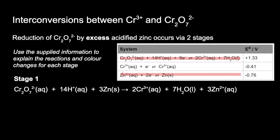In stage 2, the Cr³⁺ ions generated in stage 1 also feature in system 2. We're still interested in zinc because it's in excess. The chromium 3+/2+ system is more positive than the zinc system, so those run in the appropriate directions. We need to double the chromium 3+/2+ half equation and add it to the zinc half equation so the electrons balance, giving the overall equation for stage 2.